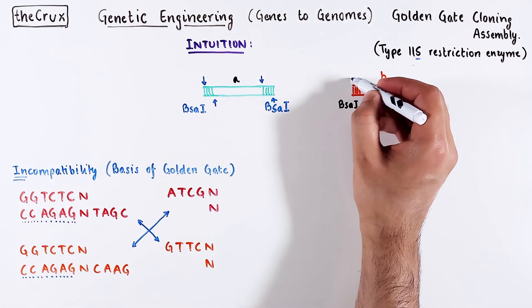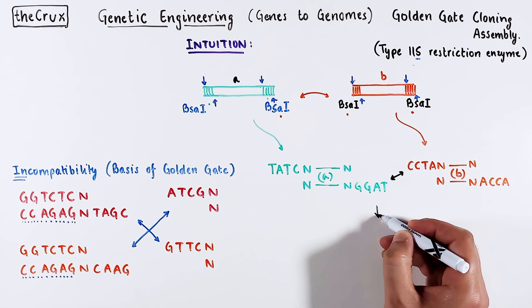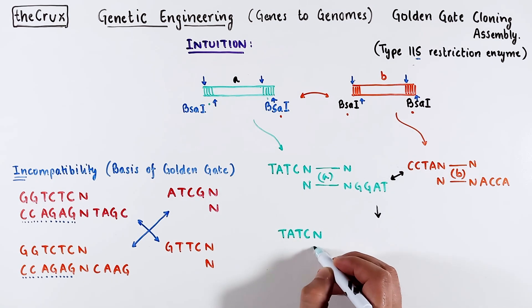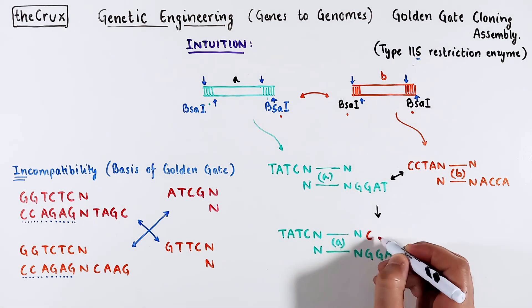You can digest these two fragments. Let's say the sticky end on fragment A looks something like this, and fragment B looks something like this. Notice that these two sticky ends are compatible with each other. Since cleavage sites are not sequence specific, these compatible ends can be designed however you prefer. If A and B were to be ligated, then they would come together at this complementary region and form a larger insert.